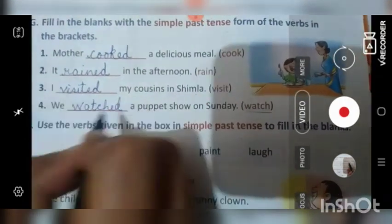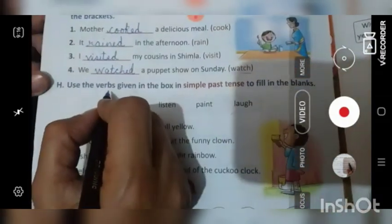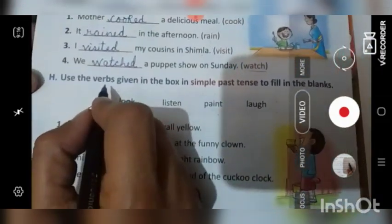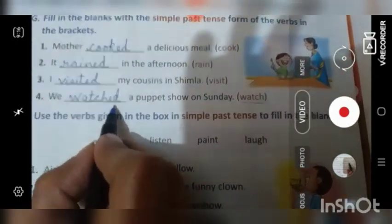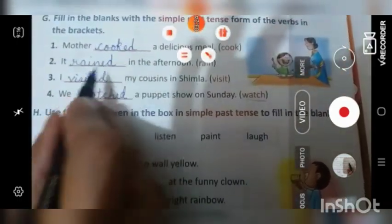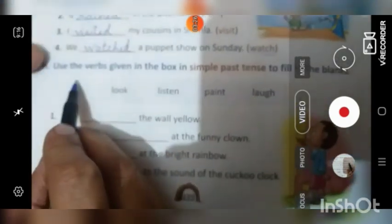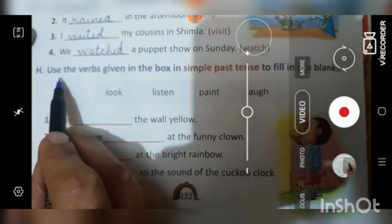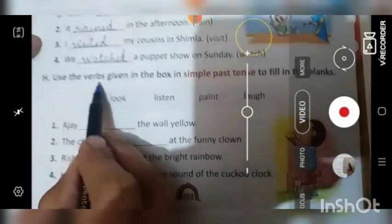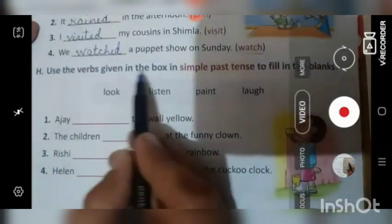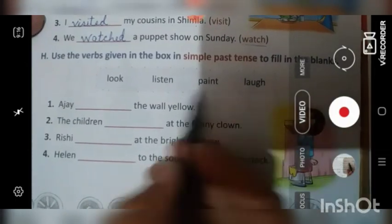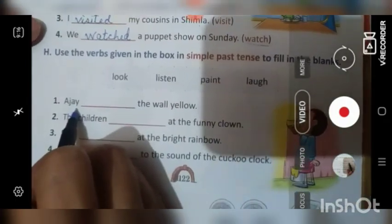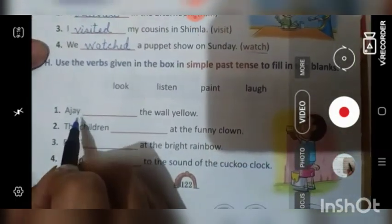Toh aapko thoda sa clear huwa hoga ki agar hama aise actions ke baare mein baat kar rahe hai joh kabhi pehle huye hai, toh hum un action words ke aage ED laga te hai. In the B part also what we have to do? Use the verbs. Verbs means action words. Given in the box in simple past tense to fill in the blanks. Again we are going to do practice of the sentences of simple past tense.